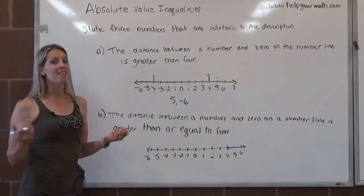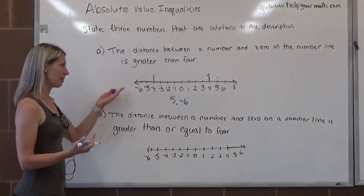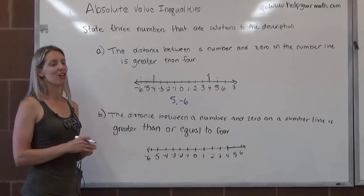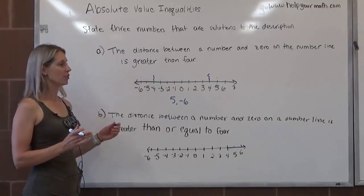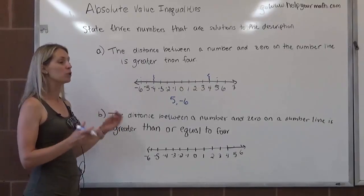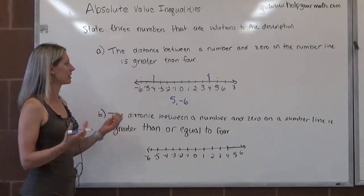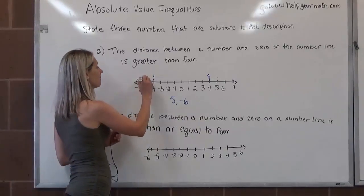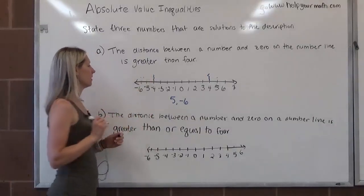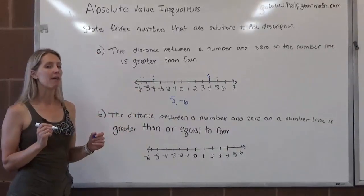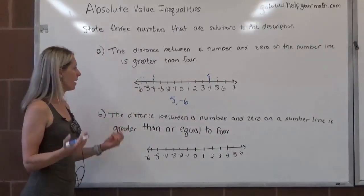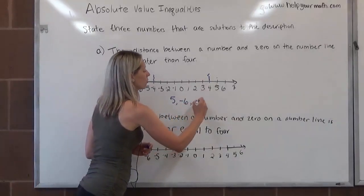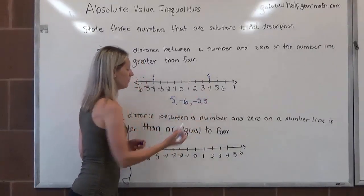Then the challenge is to find a non-integer. My number line only has integers, so non-integers are the numbers in between, such as negative 5 and a half. Negative 5.5 is right here — it's 5.5 units away from 0, so it fits the description.